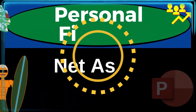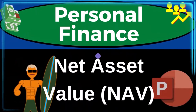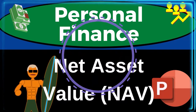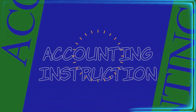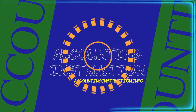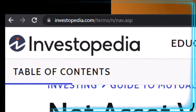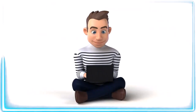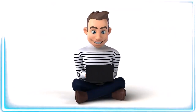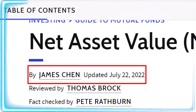Personal Finance PowerPoint Presentation on Net Asset Value (NAV). Prepare to get financially fit by practicing personal finance. Most of this information comes from Investopedia, which you can find online. Take a look at the references and resources to continue your research from there. This is by James Chen, updated July 22, 2022.